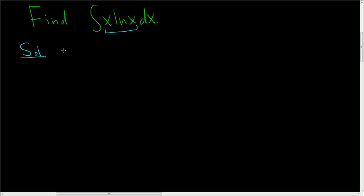When using integration by parts, you first have to pick your u and your dv. In this case, the obvious choice for u is ln(x) because it's easy to differentiate, and dv will be x dx.